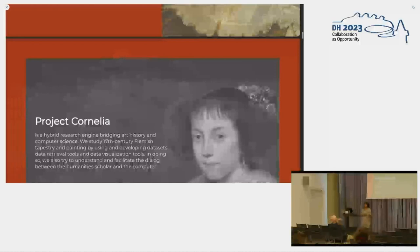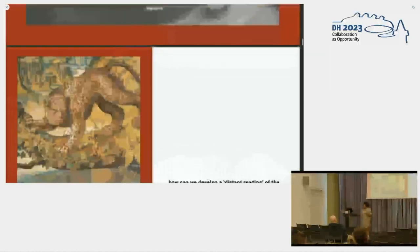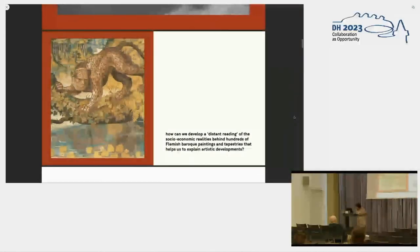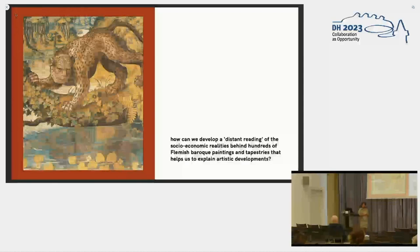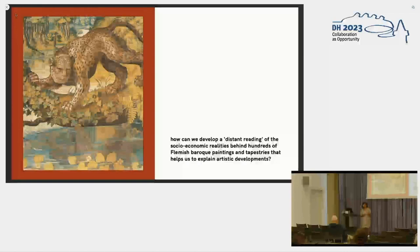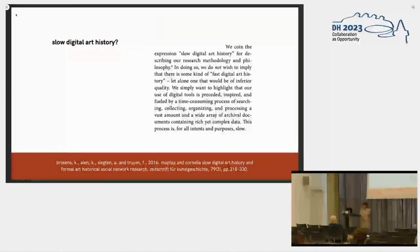The question was also how we can use technology and digital tools to support that research. The main research question of Project Cornelia was to support a distant reading — specifically, how the socio-economic realities and practices of 17th century Flanders were affecting artistic development and cultural production. From a materialist art historical approach, there's a lot of effect that social and economic dynamics have on cultural production, and we were trying to see how digital scholarship could support that analysis.